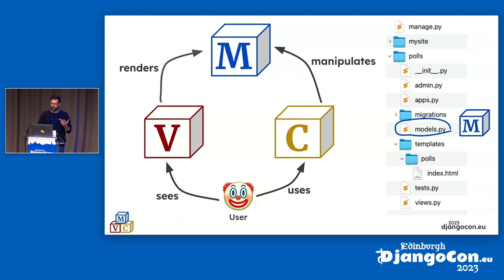The controller is where interactivity comes in — where user input comes in. The controller accepts input from the user, and then typically manipulates model objects based on that: updating models, deleting models, creating new models. These models would then be reflected back to the user and rendered in a view.